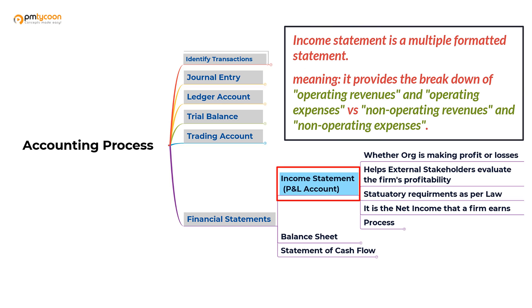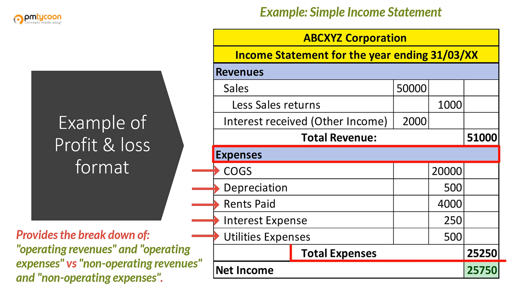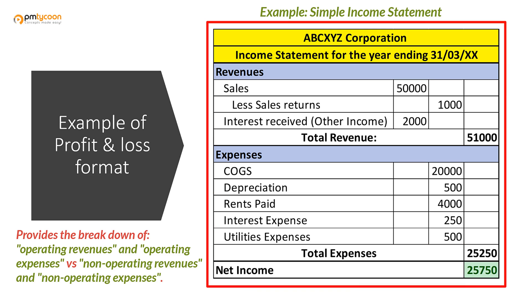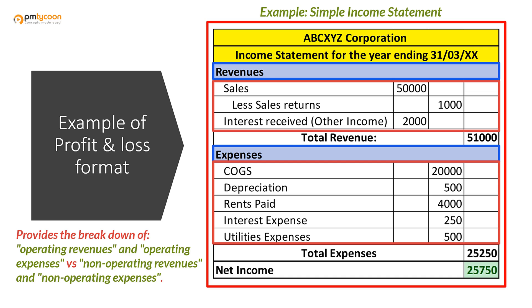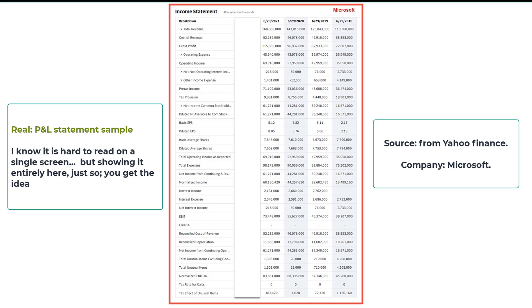The income statement is a multiple-formatted statement, which means it comes up with various subtotals of income leading to net income or net loss. As you can see on the screen, we have a revenues column with sales, sales returns, and interest received with their totals, and underneath that, expenses with their details and totals. When I say multi-formatted, it is a whole table divided into multiple formats with subtotals. This is just a small sample for easy understanding.